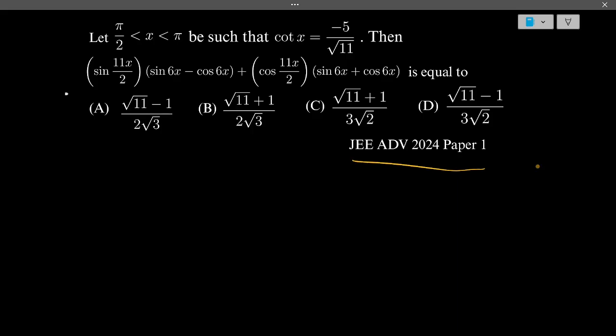Before solving this question, let's analyze every data given. First, what is given is π/2 < x < π, which means that x belongs to the second quadrant. Next is cot x = -5/√11. We will use that later and we need to find the value of this quantity and four options are given, and one of them is correct.